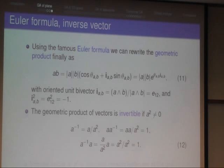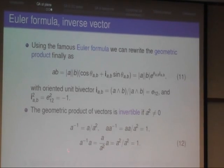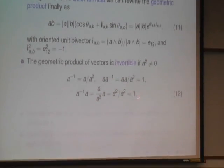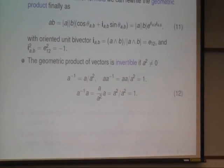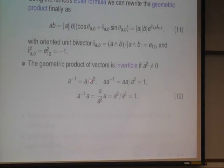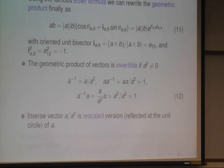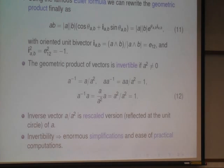The geometric product has an inverse. The inverse is simply A divided by A squared. If I multiply it I get 1. I can multiply from the right or from the left, it always gives 1. A squared is simply the length of A squared, so I simply rescale the vector. This rescaling is the same like reflection of the unit circle, not changing the direction but changing the length. That this inverse exists gives big simplifications and makes computations really easy in many cases.